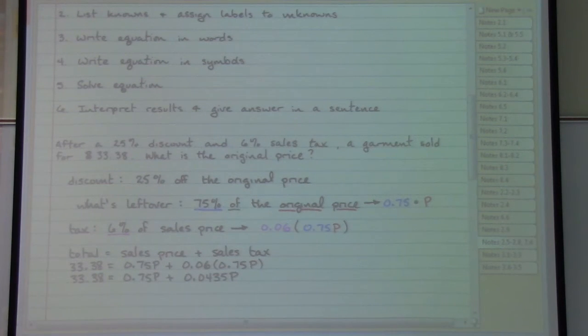And I did. That is actually 0.045, no 3 in there. So now that that's actually correct, I can put those like terms together. 33.38 equals 0.795p.